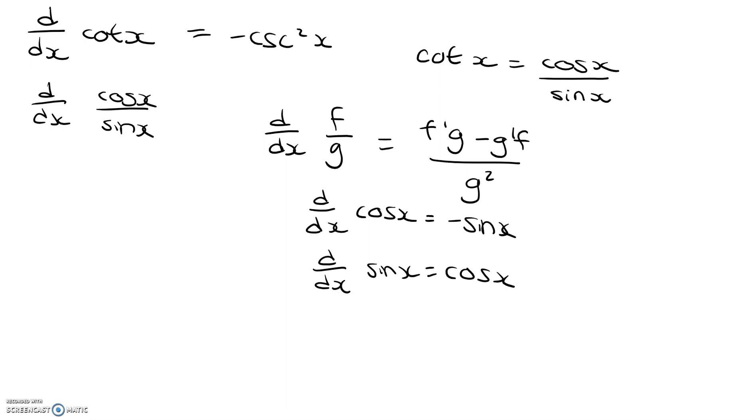When we do that, we get negative sine x times sine x minus cosine x times cosine x all over sine squared x. Okay, so let's go ahead and simplify this a bit. I'm just going to put this line here separating our notes from our actual derivation.